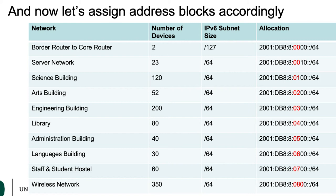Next we assign each building its own /56. The science building gets 2001:DB8:8:0100::/64. The arts building gets 2001:DB8:8:0200::/64. This continues for all remaining buildings all the way to the wireless network, which is assigned 2001:DB8:8:0800::/64.